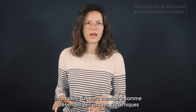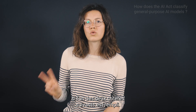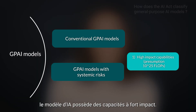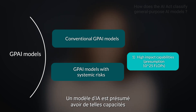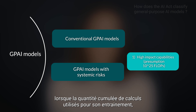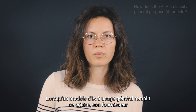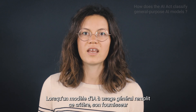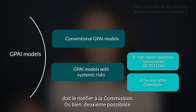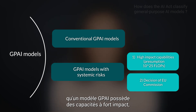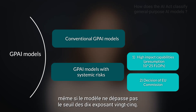An AI model will be considered as presenting systemic risks if one of the two following criteria is met. First, the AI model has high impact capabilities. An AI model is presumed to have such capabilities when the cumulative amount of computation used for its training, measured in floating-point operations, exceeds 10^25. When a general-purpose AI model meets this criterion, its provider must notify the Commission. Or, second, the EU Commission adopts a decision stipulating that a GPAI model has high impact capabilities even if the model does not meet the 10^25 threshold.